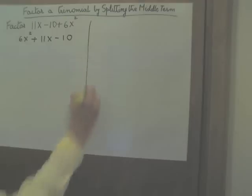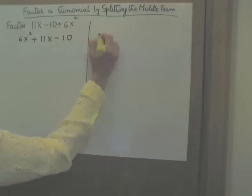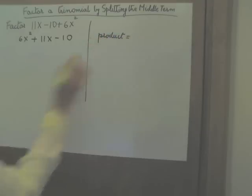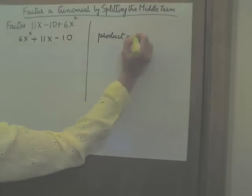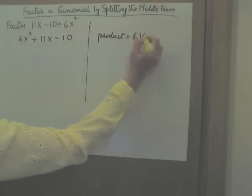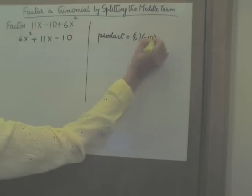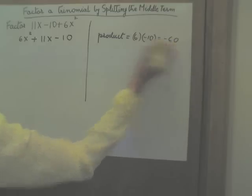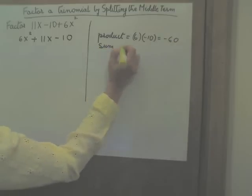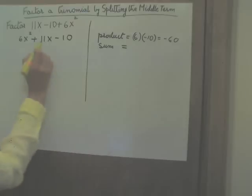In the next step, we need two numbers whose product is the product of the leading coefficient and the constant term, 6 times negative 10, which is negative 60. And at the same time, the sum of these two numbers has to be the coefficient of your middle term, 11.